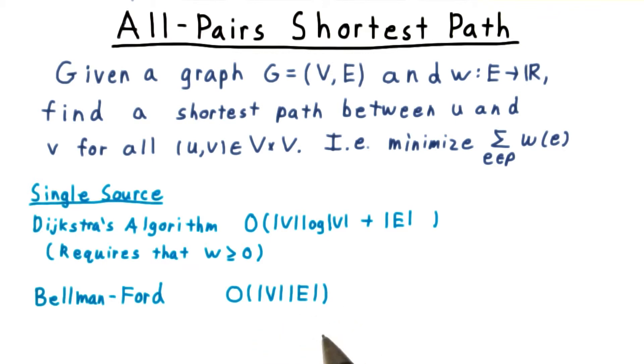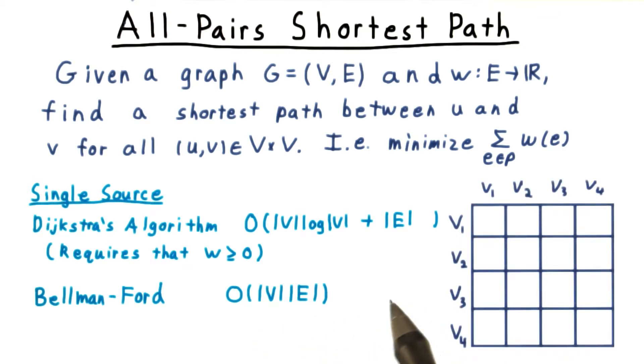Now we can run these algorithms multiple times, once with each vertex as the source. If we visualize the problem of finding the shortest path between all pairs as filling out a grid like this one, then Dijkstra or Bellman-Ford would correspond to filling out this one row at a time.